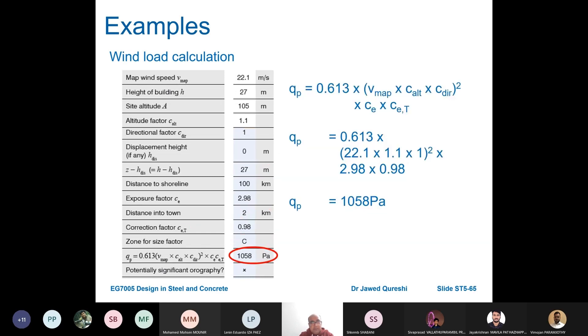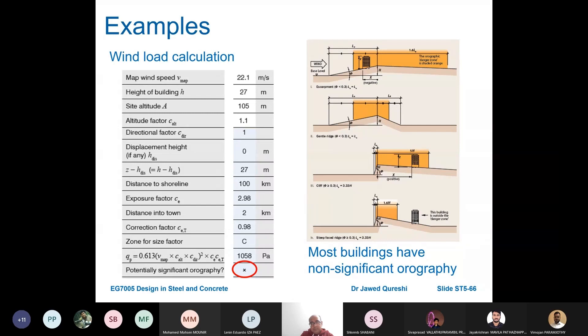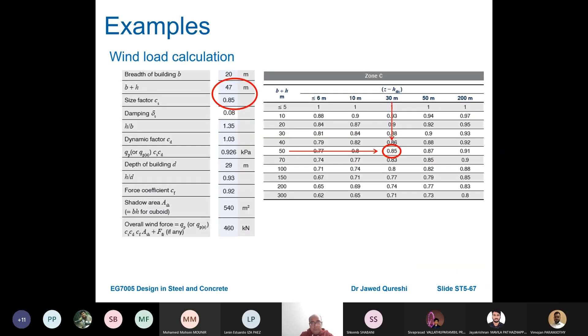Then we get q_p. The formula is 0.613 times v_map times c_altitude times c_dir plus c_e times c_e,t. V_map is 22.1, c_alt is 1.1, c_dir is 1, c_e is 2.98 and c_e,t is 0.98. If you put all these values you get q_p.